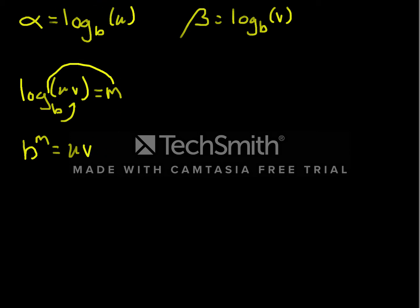But what is uv equal to? Well, coming back up to here, this tells us that b raised to the alpha power is equal to u. Similarly, b raised to the beta power is equal to v. So let me write that over here, that we know that u is equal to b raised to the alpha power, and v is equal to b raised to the beta power.